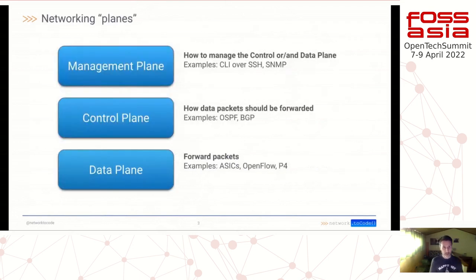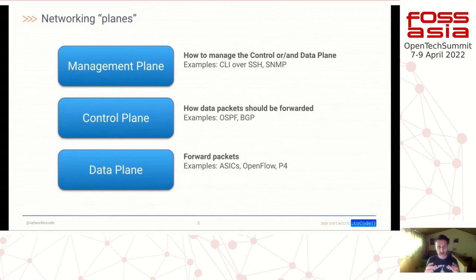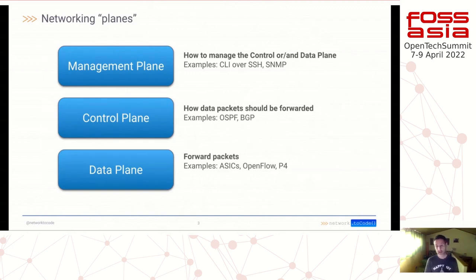To narrow down the topic — we actually had a network-related session before this one — when I talk about network automation, this is a really open question. You can think about networking in a not very concrete way, because actually networking has different planes. At the bottom of the stack, we see the data plane, where actual packets are forwarded — one packet comes in one port and goes out another. This has been pretty static for a long time, but since the rise of SDN with OpenFlow and other protocols, or by directly programming the ASICs, you can change that behavior. But we are not focusing on that.